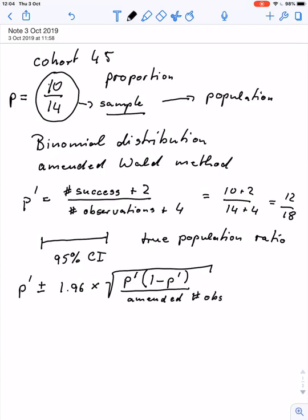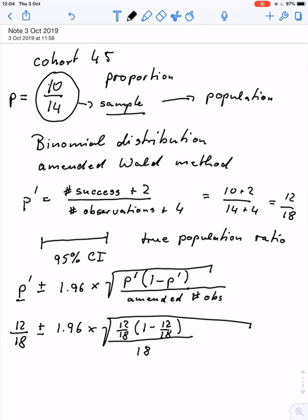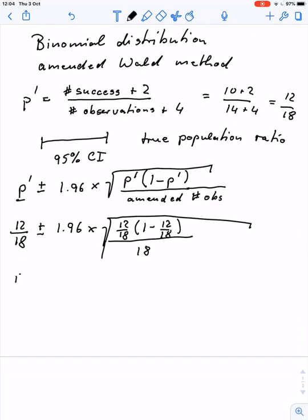If we put that in, we have 12 over 18, that's our amended proportion, plus minus 1.96 times the square root of our amended proportion, that is 12 over 18 times 1 minus 12 over 18 divided by 18. So let's see what we get for that. We get 12 over 18 for our proportion, plus minus. Now I quickly switch over to a calculator.